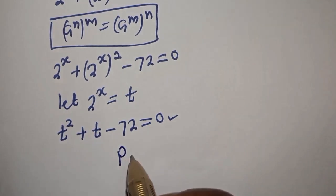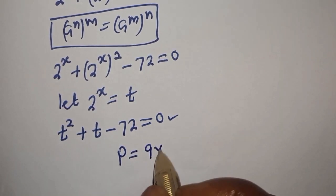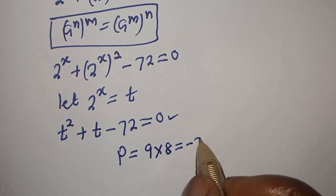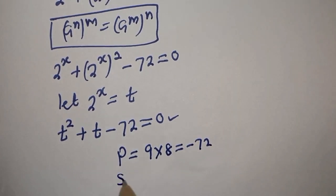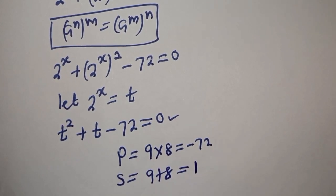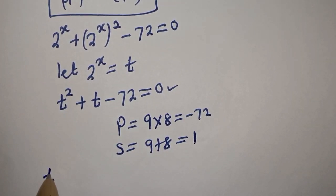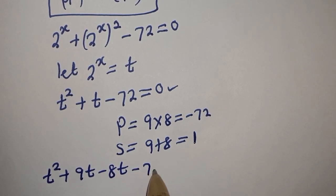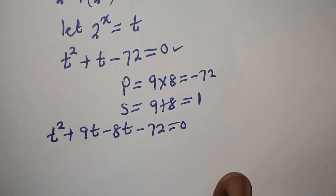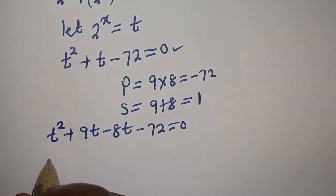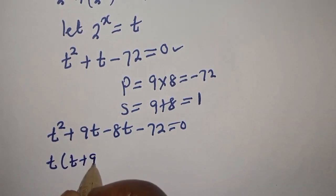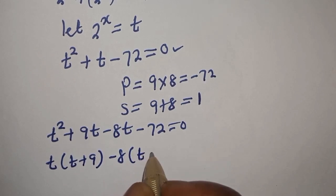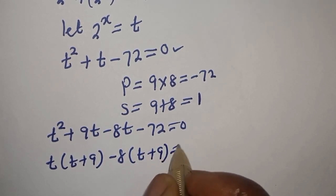The product is equal to 9 multiplied by negative 8, which equals minus 72. The sum is equal to 9 plus negative 8, which equals 1. Now substituting, we have T squared plus 9T minus 8T minus 72 is equal to 0. T is common here, giving T bracket T plus 9, minus 8 bracket T plus 9, is equal to 0.